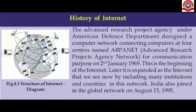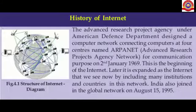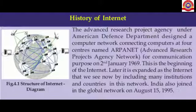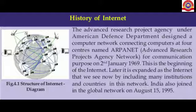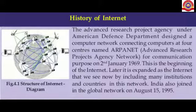The Advanced Research Project Agency under the American Defense Department designed a computer network. Network means a connection of computers. They connected computers at four centers only, named ARPANET, for communication purposes. This was done on 2nd January 1969, and this is the beginning of internet. ARPANET is the first form of internet and consisted of computers at only four centers.